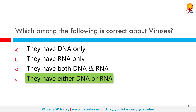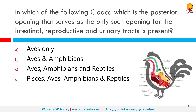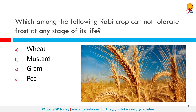The entire infectious virus particle is called a virion, consisting of the nucleic acid and an outer shell of protein. In which of the following is a cloaca present? A cloaca is the posterior opening that serves as the only such opening for the intestinal, reproductive, and urinary tracts. It is not present in humans, but is present in many vertebrate animals, opening at the vent.